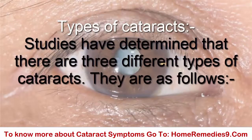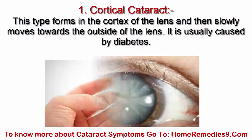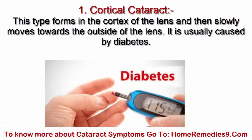Types of Cataracts. Studies have determined that there are three different types of cataracts. 1. Cortical Cataract: This type forms in the cortex of the lens and then slowly moves towards the outside of the lens. It is usually caused by diabetes.